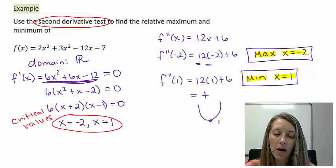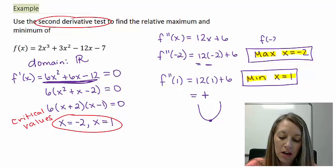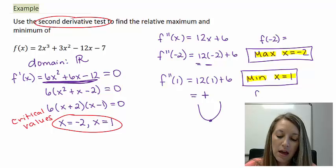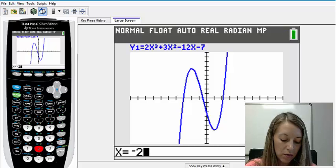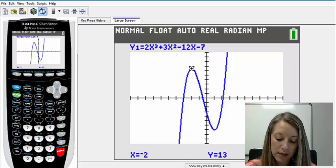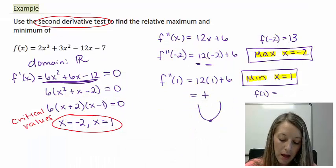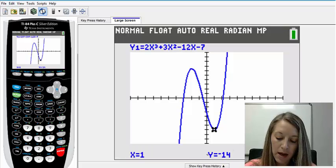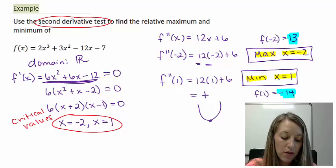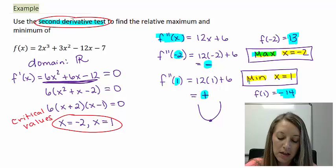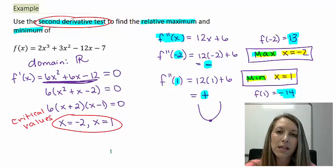This problem asks us to find where the extrema are, but if we needed the actual coordinate values, we would plug the critical values into the original equation. Using the calculator's trace function: plugging in negative 2 gives a high point of 13, and plugging in 1 gives a low point of negative 14. So the relative maximum is 13 and the relative minimum is negative 14. We used the second derivative test — plugged in critical values, checked whether the result was negative for maximums or positive for minimums — and found the relative extrema of the graph.